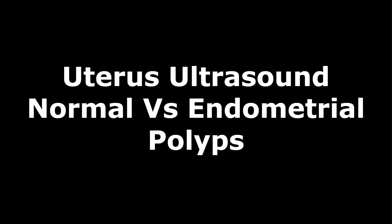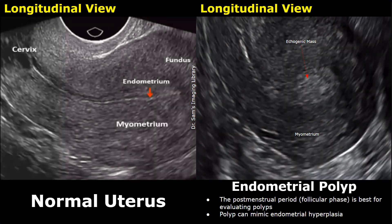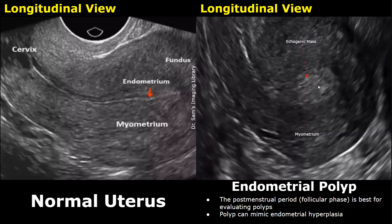Hello everyone, this is Dr. Sam, and this video is about ultrasound of endometrial polyps. We will compare the ultrasound appearances of the normal uterus with the appearance of an endometrial polyp. An endometrial polyp is a benign uterine mass which arises from the endometrium.